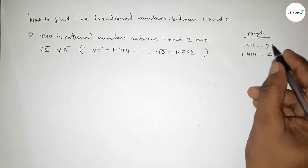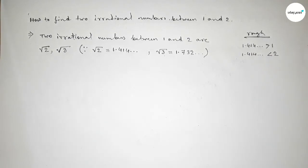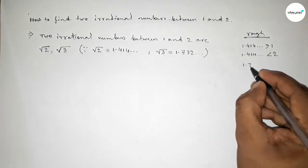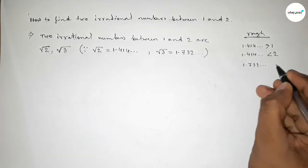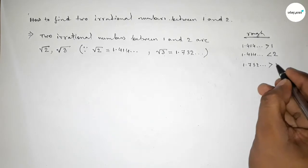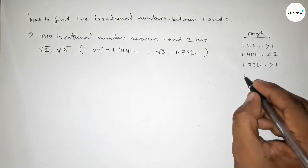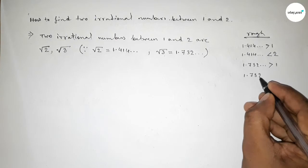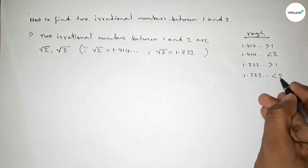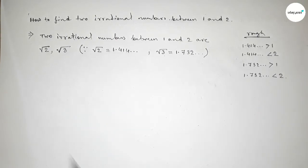Now the value of √3 equals 1.732 and continuous, which is always greater than 1, and 1.732 is always less than 2. So √3 is also an irrational number between 1 and 2. So that's all.